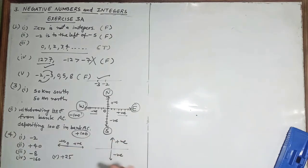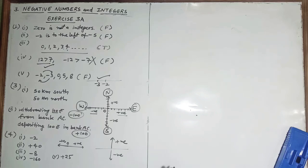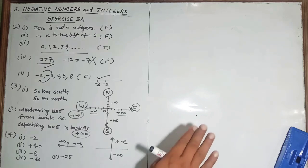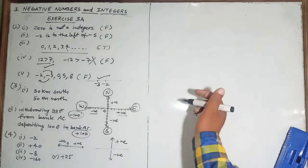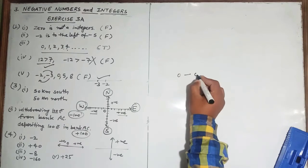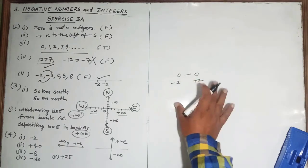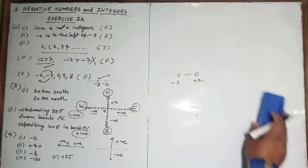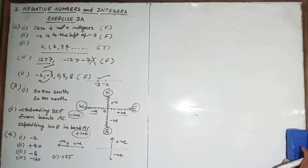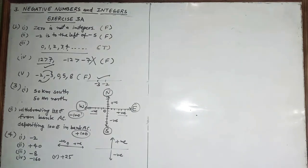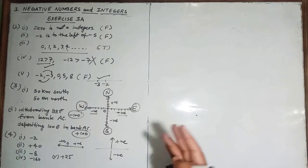Question number five: write the opposite of the following, such as minus 2311. You write the same digits with the opposite sign. The opposite of zero is zero only; the opposite of minus two is plus two. Same way, you put the opposite sign with the same magnitude.